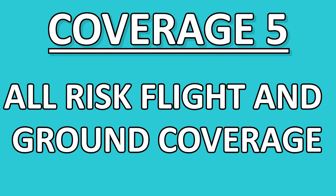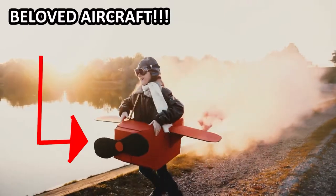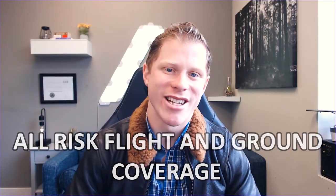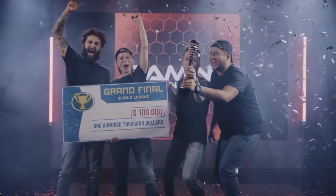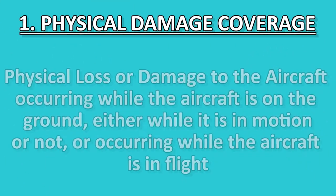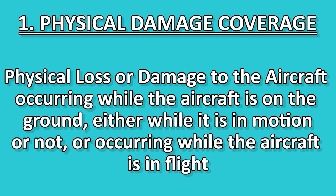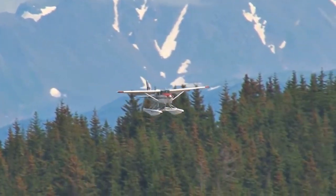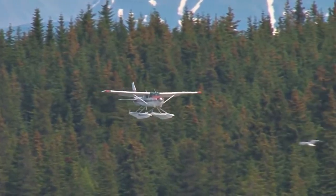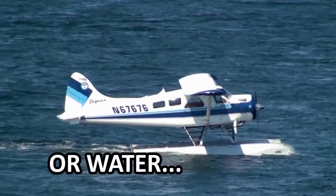Now we're going to talk about the best coverage you can buy for your aircraft: all risk flight and ground coverage. It consists of two major components. Number one: physical loss or damage to the aircraft occurring while the aircraft is on the ground, either in motion or not, or occurring while the aircraft is in flight. What this basically means is there is physical damage coverage for the aircraft whether it is in the air or on the ground — this is what all risk flight and ground coverage truly means.